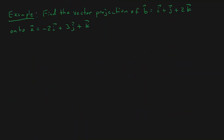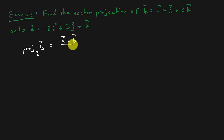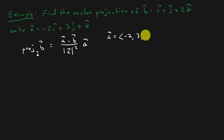So let's go ahead and work this one out. It says find the vector projection of B onto A. There's vector B, there's vector A. Let's write out the formula so we can see it while we're working: the dot product of A and B over the magnitude of A squared, times vector A. Vector A is ⟨-2, 3, 1⟩ and vector B is ⟨1, 1, 2⟩.